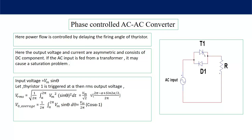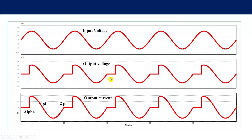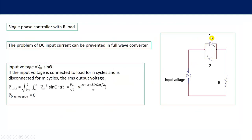Now let's see how to remove this DC component. To remove it, we replace the diode with a thyristor. In this circuit you can see two thyristors are connected, and a symmetrical output voltage can be obtained. This is the single-phase AC to AC controller with R load. The problem of DC input current can be eliminated in the full-wave converter. If the firing angle of thyristor 1 is alpha and thyristor 2 is fired at pi plus alpha, then the average output voltage will be zero.